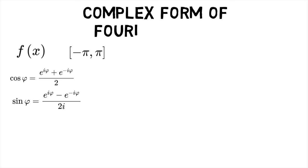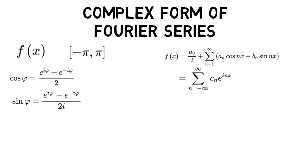we can write the Fourier series of the function in complex form as f of x equals summation of cn into e power i n x from n equals minus infinity to infinity.